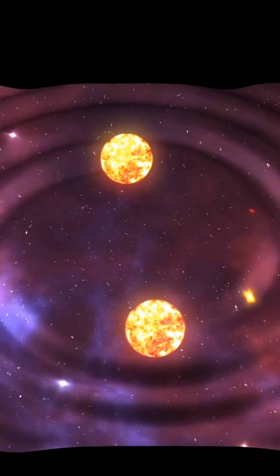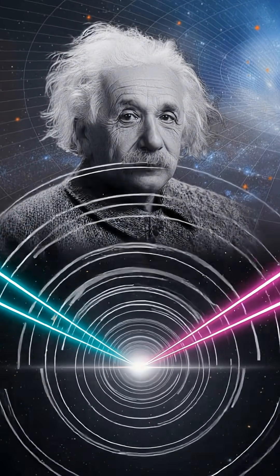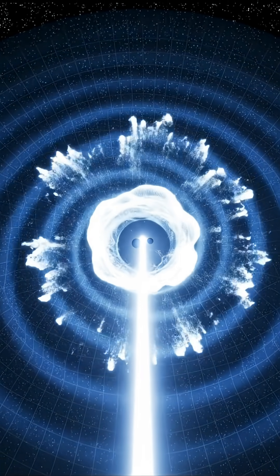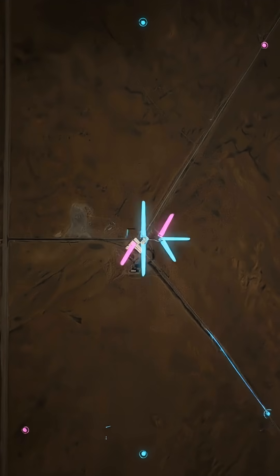Gravitational waves are ripples in space-time, predicted by Einstein, and first detected in 2015 by LIGO. But what if we could do more than just observe these cosmic tremors? What if we could nudge them, even slightly, with beams of light?